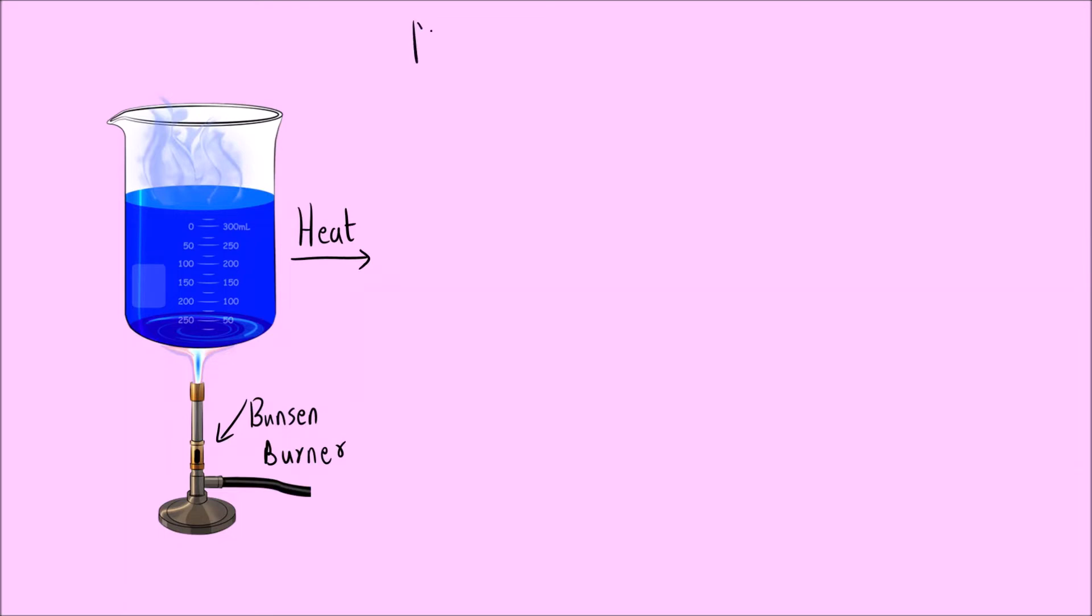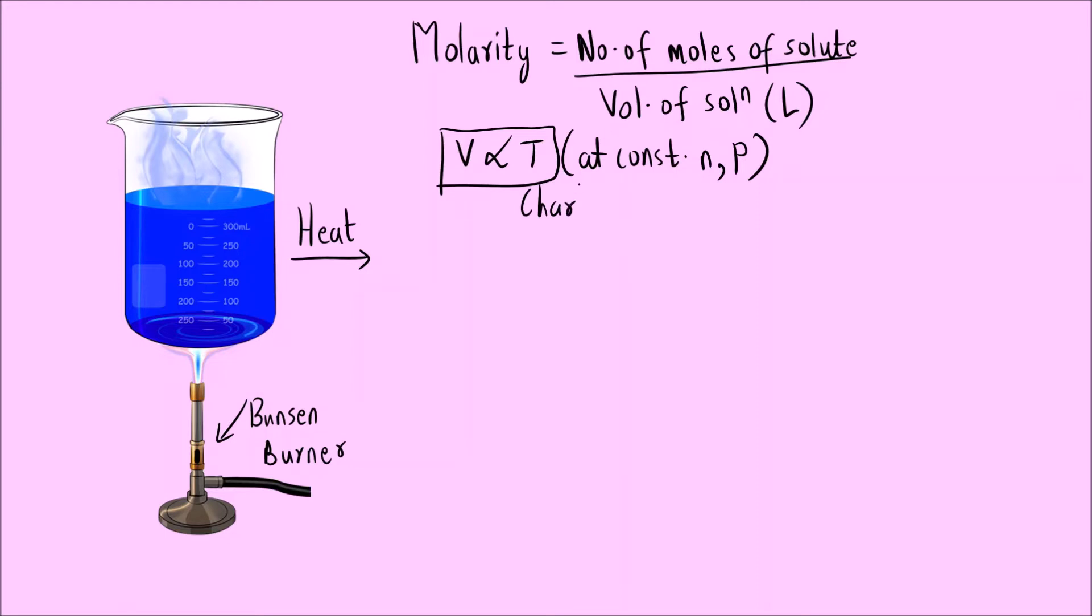Let us first again see the formula for molarity. What is molarity? Molarity is number of moles of solute divided by the volume of solution in liters. Now, suppose you are thinking that volume is directly proportional to temperature at constant number of moles and pressure. Right? This is called Charles Law.